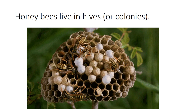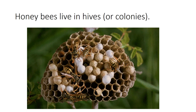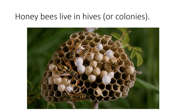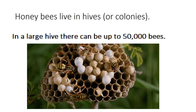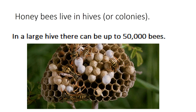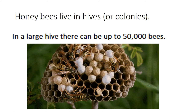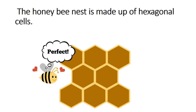Honeybee lives in hives or colonies. Honeybee جو ہیں وہ colonies یا hives میں رہتی ہیں اور اردو میں اسے چھتہ کہتے ہیں۔ In a large hive there can be up to 50,000 bees — ایک بڑے چھتے میں پچاس ہزار تک شہد کی مکھیاں ہوتی ہیں۔ The honeybee nest is made up of hexagonal cells — ان کے چھے سائیڈیں ہوتی ہیں۔ Hexa کہتے ہیں چھے سائیڈز کو، یعنی honeybee اپنا گھر اس طرح سے بناتی ہے — اسے hexagonal کہتے ہیں۔